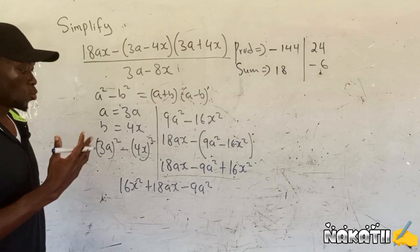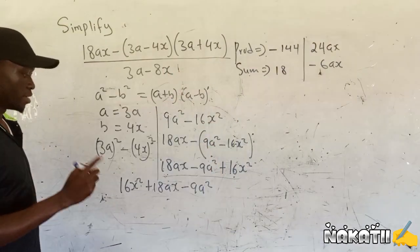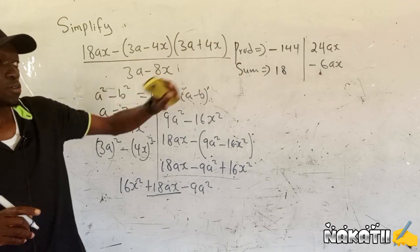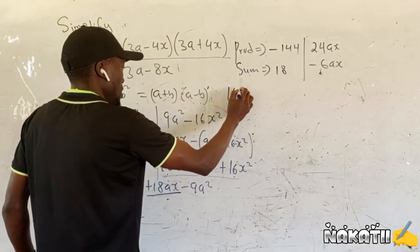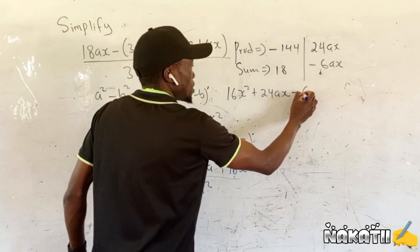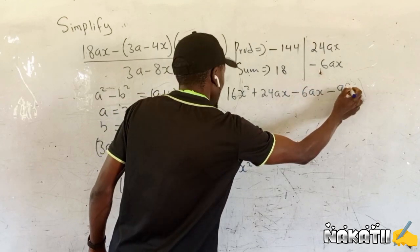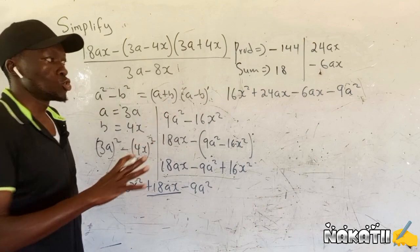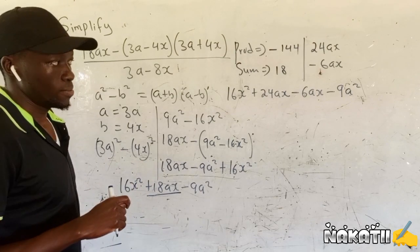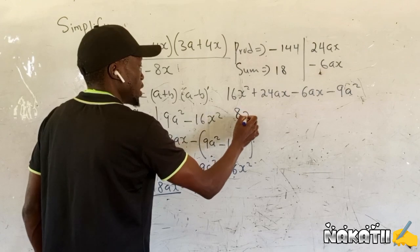After getting the two numbers, what you just do is come and replace positive 18ax with those two values. You're going to have 16x squared plus 24ax minus 6ax, then minus 9a squared. Group them into two and check what is common. If you look at this one here, we check what is common — it is 8x. You factor it outside. You're going to have 8x outside.